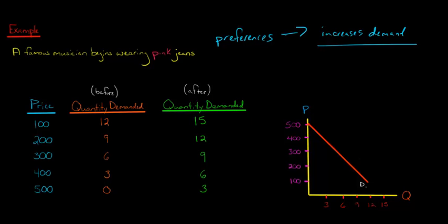But again, we said that there was an increase in demand. So what does that mean? That means that this curve is going to shift to the right. So how is it going to shift?